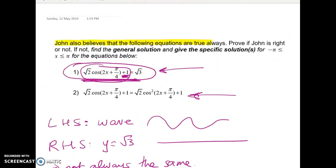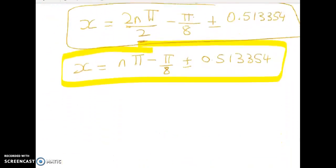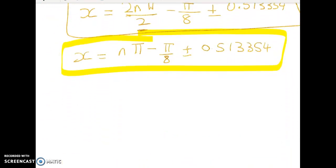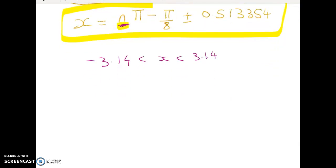John believes that the following equations are true always, and we found out that John was not right, and now we've found the general solution. Now the next thing we've got to do is give the specific solutions for this range. So this is pretty easy, but it's also pretty tedious. What I have to do is take my general solution and chuck in values of n and figure out the values, and then I'm looking to see whether they're between negative 3.14 and positive 3.14.